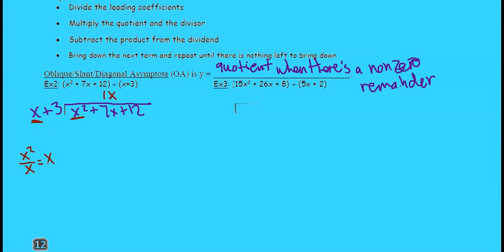Okay, multiply the quotient and the divisor. So you're going to multiply this x times x plus 3. And you're going to subtract that product. So basically, we're going to multiply by negative the quotient that we got times the divisor. So we get negative x squared minus 3x. You're going to subtract these. That's 0. That's 4x. And then bring down the 12.